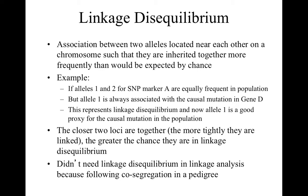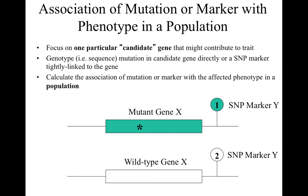Linkage disequilibrium means that two alleles located near each other on a chromosome are inherited together more frequently than would be expected by chance. For example, if alleles 1 and 2 are equally frequent in the population, but only allele 1 is always associated — always on the same chromosome — with the causal mutation in some gene X, this represents linkage disequilibrium. Allele 1 is then a good proxy for the causal mutation in the population, even though it's not the actual mutation.